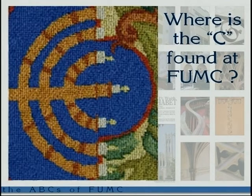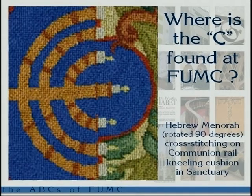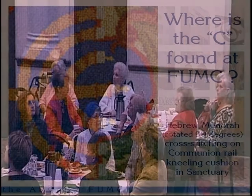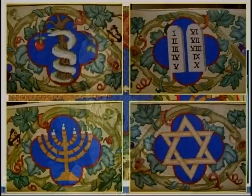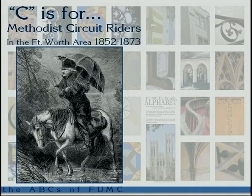Where's the C found? It's another kneeling cushion — this one is in the sanctuary all the time. There are actually 16 kneeling cushions in there; they're rotated now that the center section is taken out, so there are 32 designs on the kneeling cushions. Four of the designs are from the Old Testament. The C is the menorah.